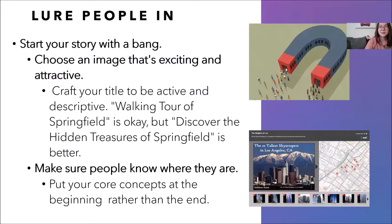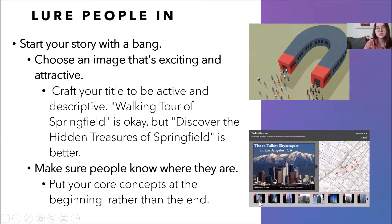To draw people in, start with a strong story voice — introduce what the topic of your story map is. Choose the right image to attract people, and make sure viewers know where they are by providing a description of your map. For example, if the map is about Los Angeles, show a Los Angeles map and highlight key points of interest.